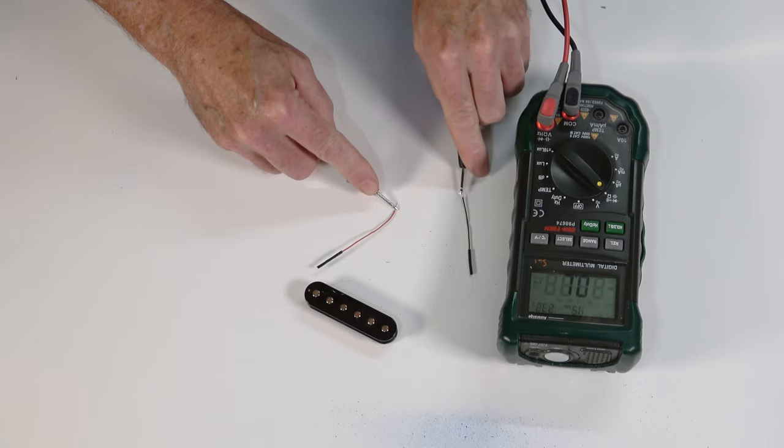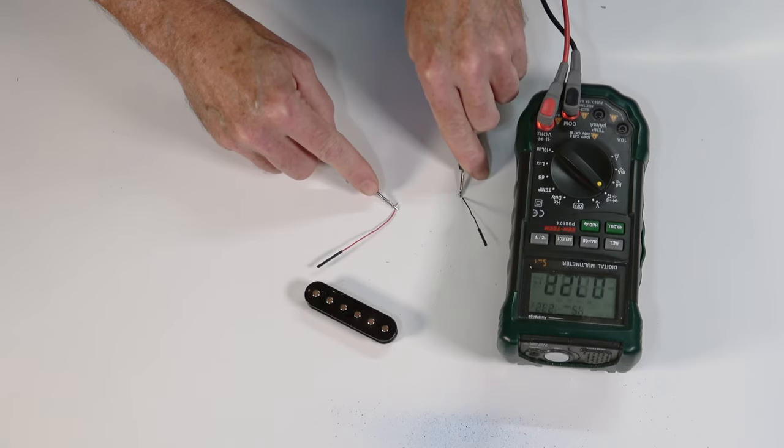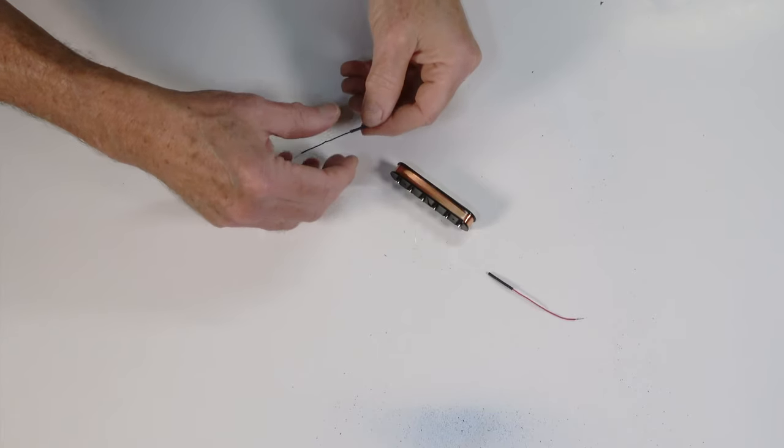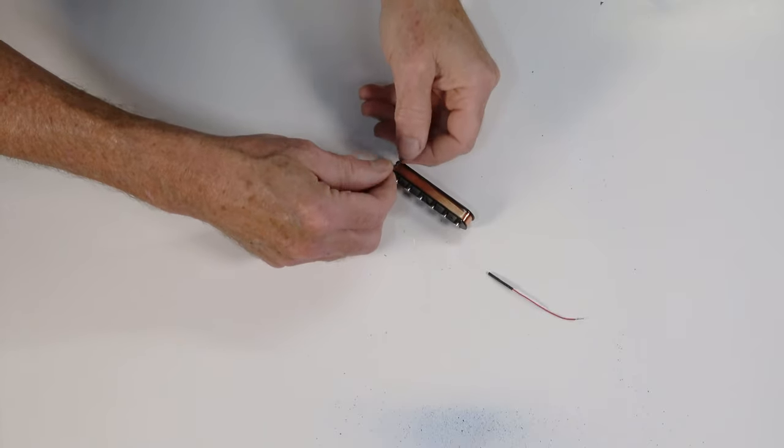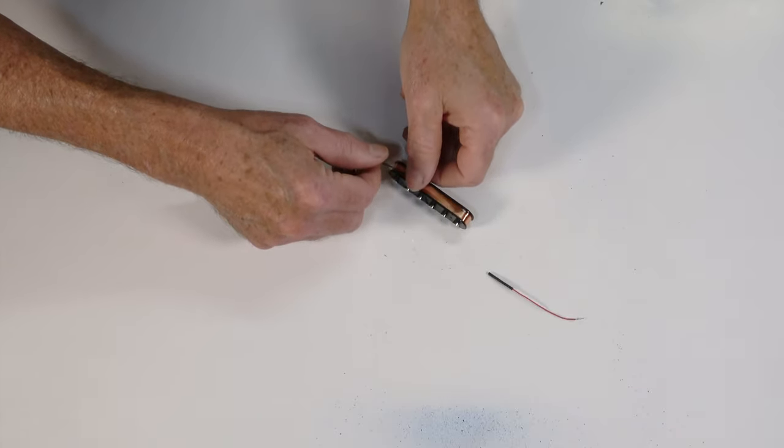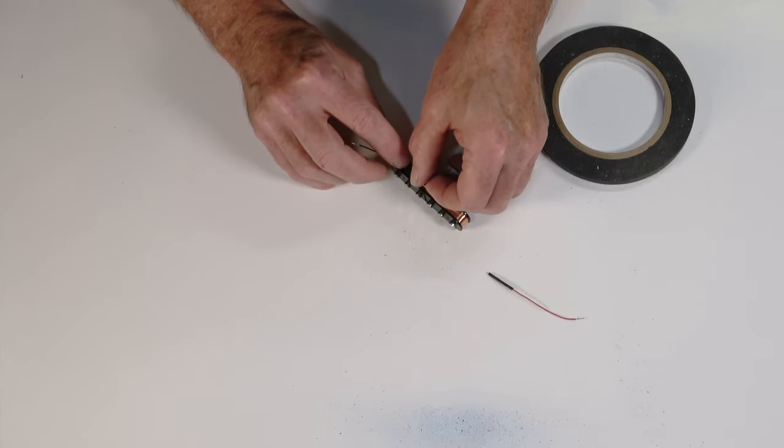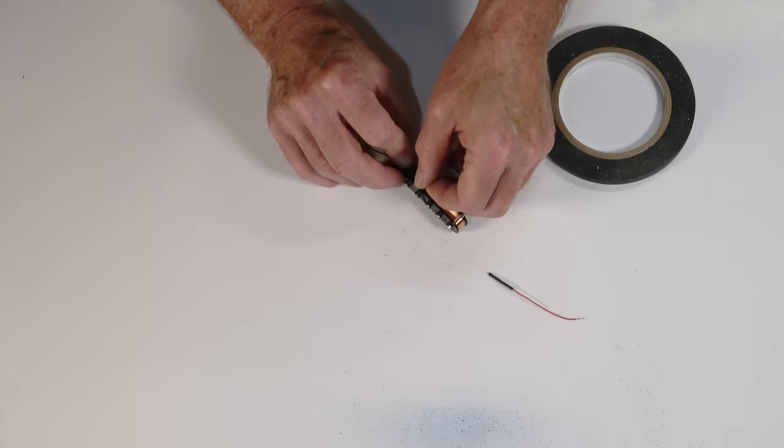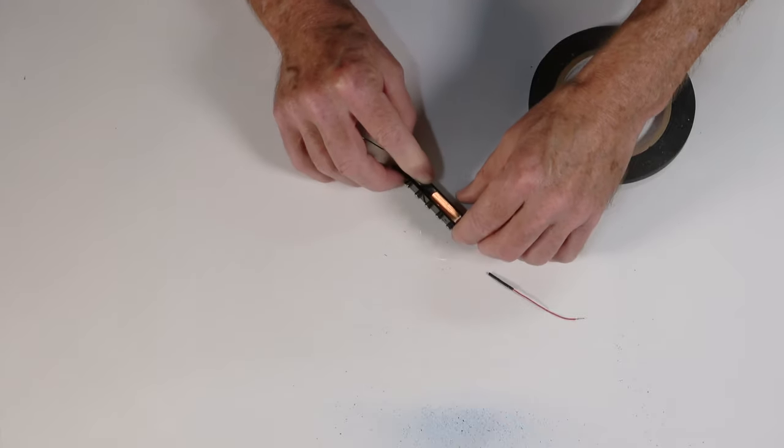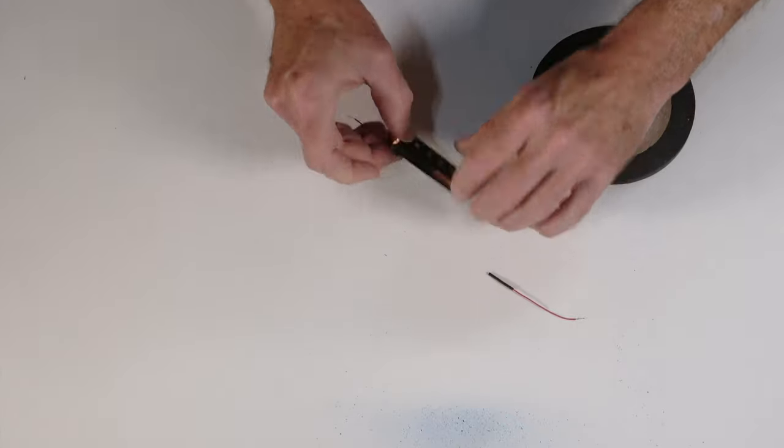A quick check with the multimeter shows that 7,000 turns of wire is going to yield about 7,000 ohms of DC resistance. Now obviously I can't let those black and red lead wires just hang there, so I roll them up and place them on the sides of the bobbin, and then cover them with some bobbin tape, and then I'll wrap the entire bobbin in bobbin tape to protect the coil windings.